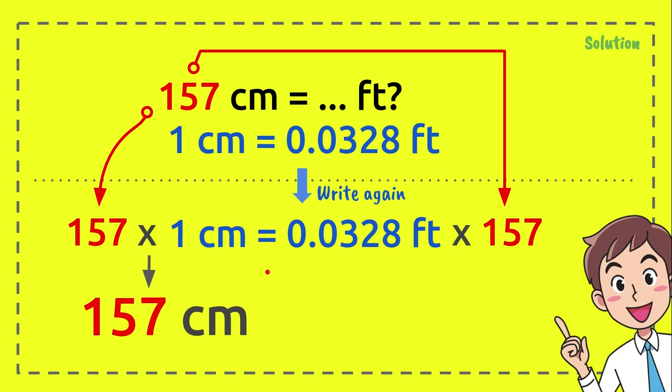And this number times 157 centimeters equals 5.15092 feet. And that's the answer. Thank you so much for watching and see you again in the next video.